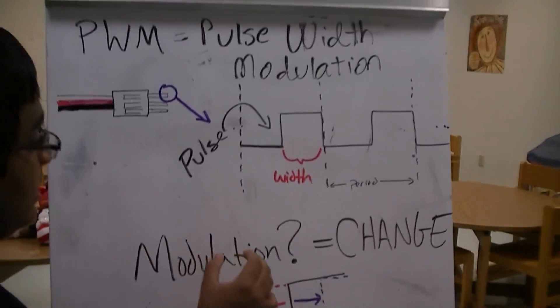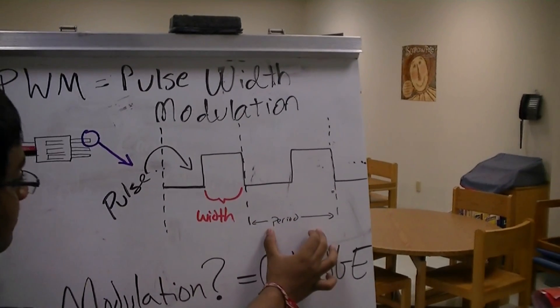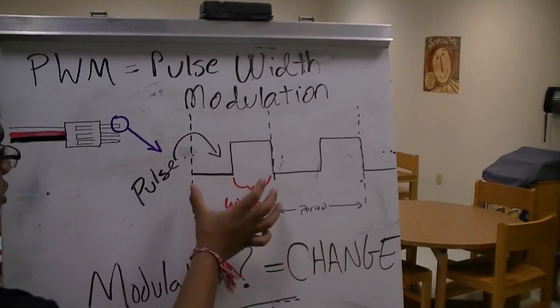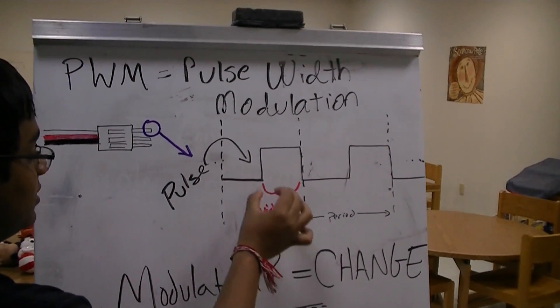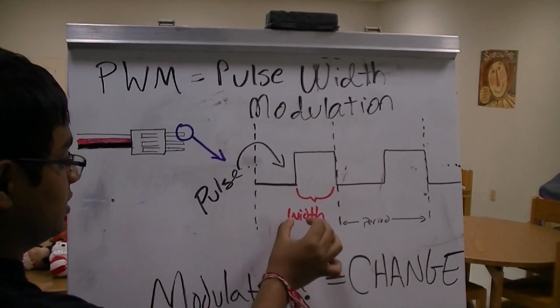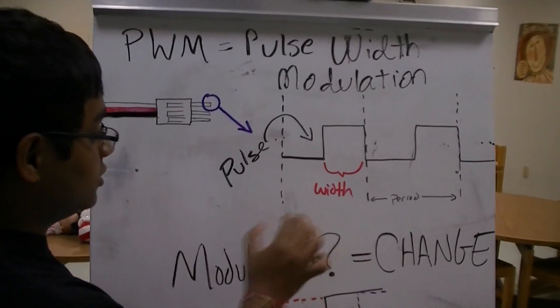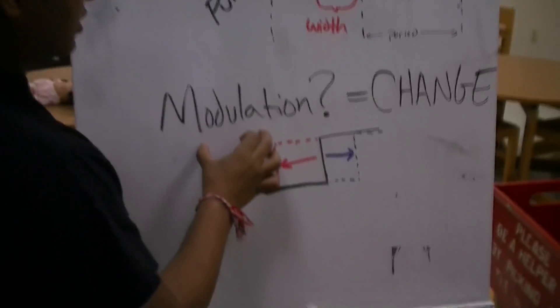In this set of commands, there's a period of time. Inside a period of time, there's a pulse. The width inside the pulse determines the speed and direction of the robot. The change in this width is known as modulation.